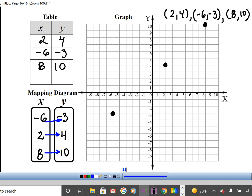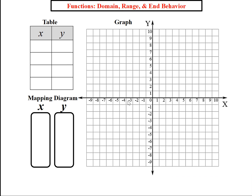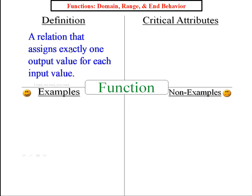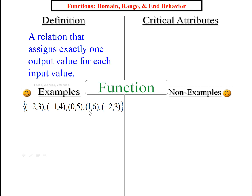So we've talked about ordered pairs, range, domain, and a relation — a relation is a whole set of points. Now let's open a prior model and start with what functions are. A function is a relation that assigns exactly one output value for each input value. For example, consider: (−2, 3), (−1, 4), (0, 5), (1, 6), (−2, 3).